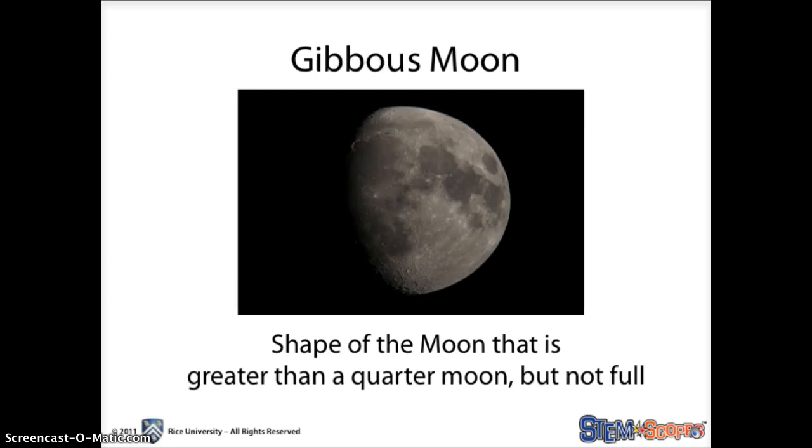Gibbous moon. This is the shape of the moon that is greater than a quarter moon, but not full. The gibbous moon happens on either side of the full moon, from the first quarter to the full moon, and from the full moon to the last quarter.